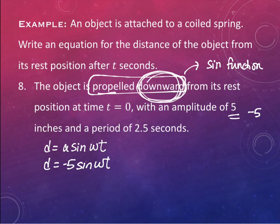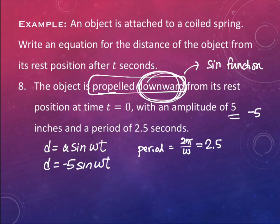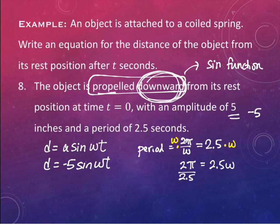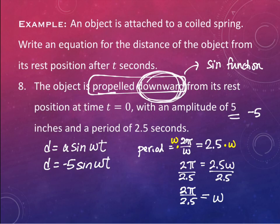The period is 2.5 seconds. Period = 2π/ω = 2.5. Multiply both sides by ω: 2π = 2.5ω. Divide by 2.5: ω = 2π/2.5. We can't leave a decimal in the denominator of a fraction, so multiply numerator and denominator by 2 to get ω = 4π/5.